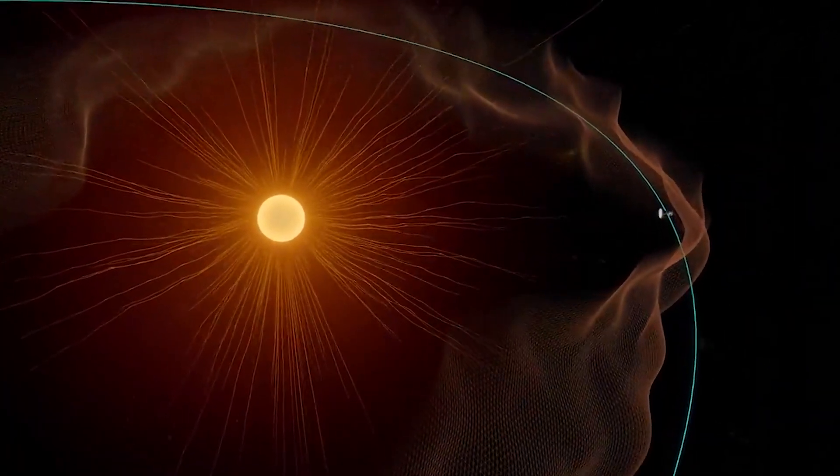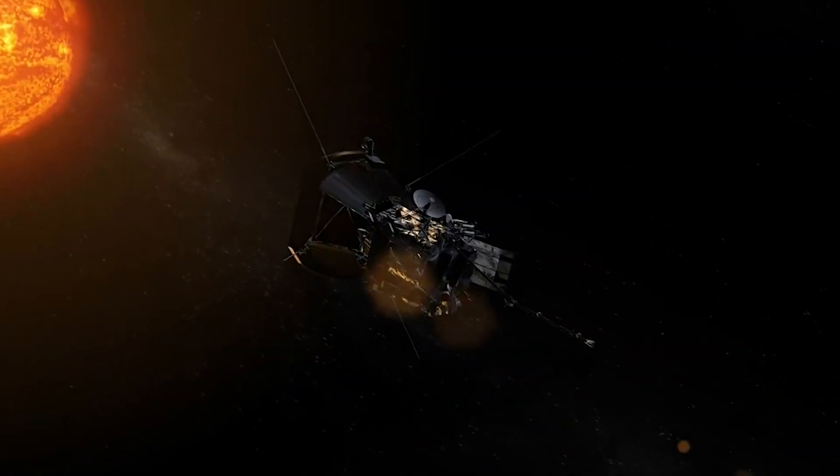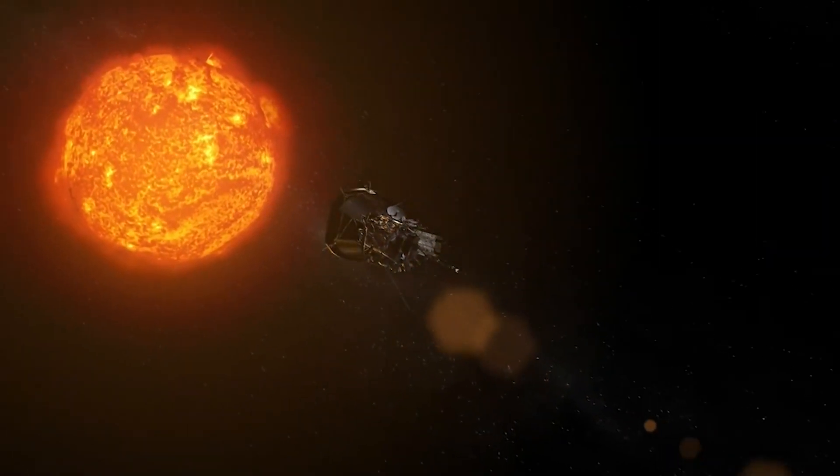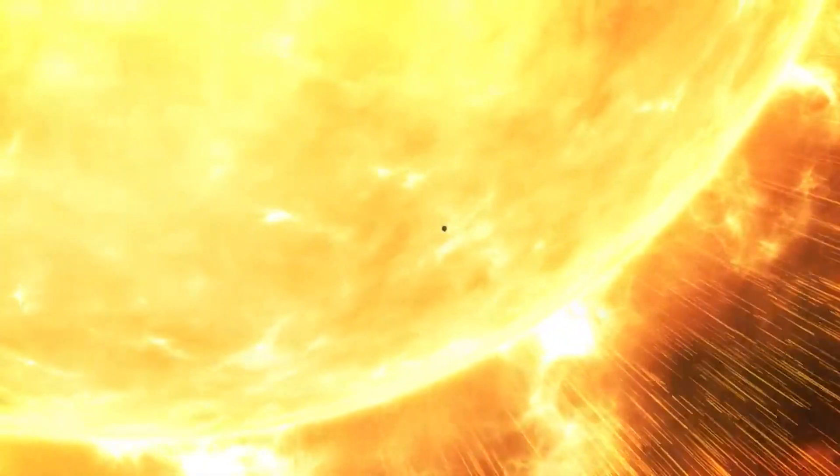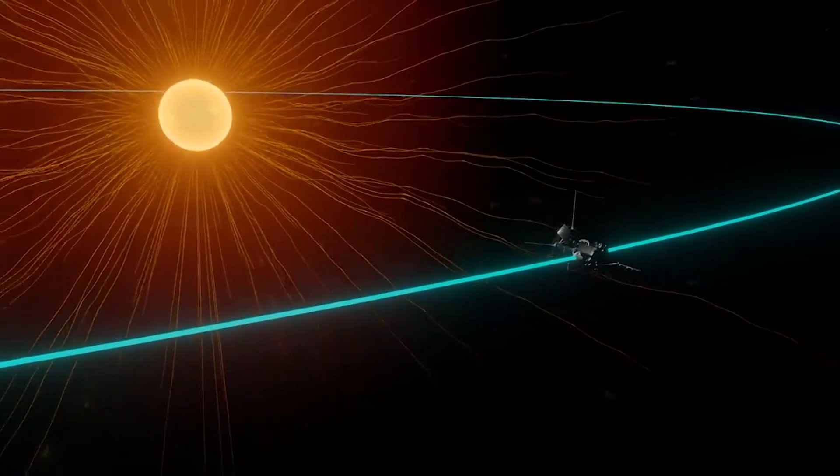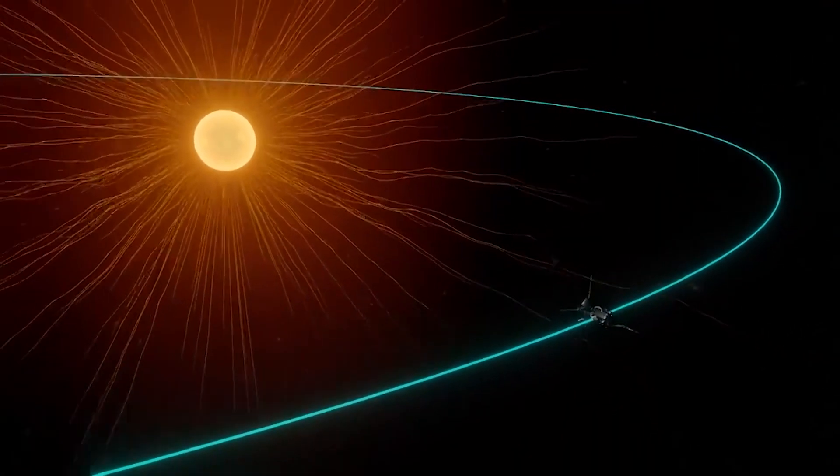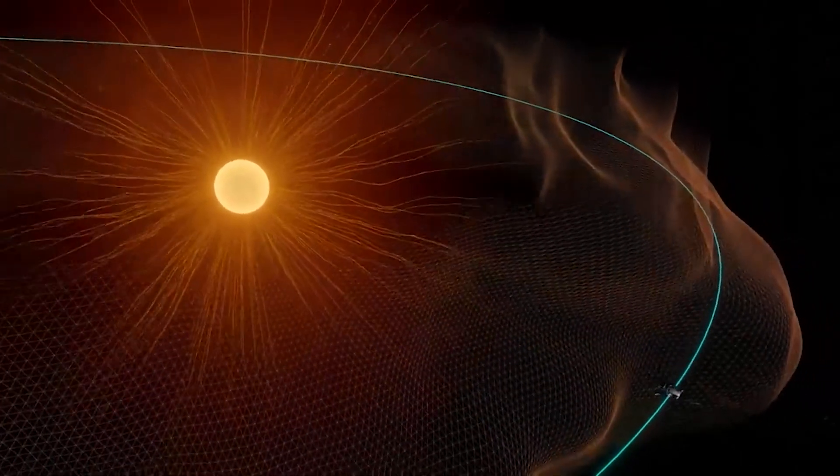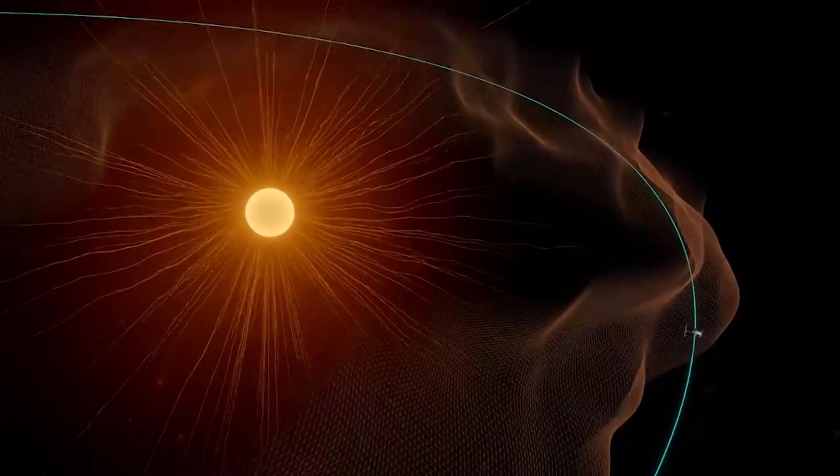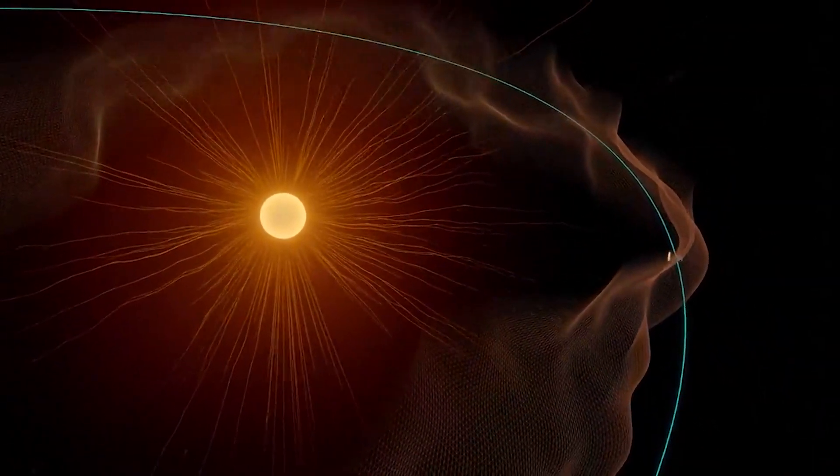As part of its ongoing mission, the Parker Solar Probe flew close to the Sun for the 14th time. On Sunday, December 11th, at a distance of around 8.5 million kilometers, NASA's spacecraft flew by the Sun's surface, also known as the photosphere, in order to gather information on the corona, the outer atmosphere of the Sun.